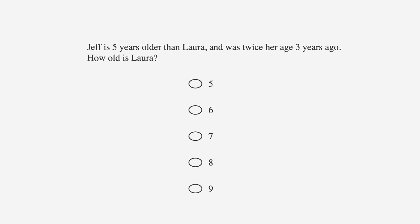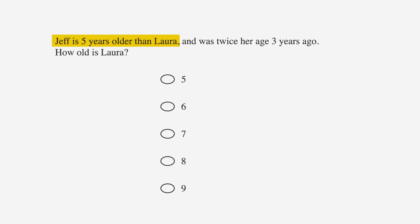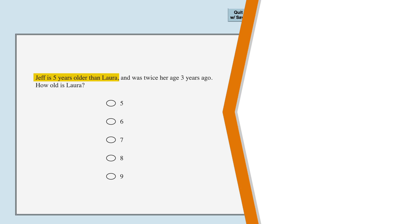Jeff is five years older than Laura and was twice her age three years ago. How old is Laura? The answer choices are 5, 6, 7, 8, and 9. We're told that Jeff is five years older than Laura. Let's take out some scratch paper and start breaking down this word problem into math. Let's say that Jeff's age is j and Laura's age is l. In that case, j equals l plus five.